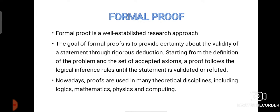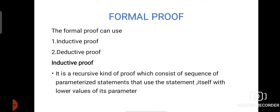Nowadays proofs are used in many theoretical disciplines including logistics, mathematics, physics, and computing. Formal proof can be divided into two types: inductive proof and deductive proof. Inductive proof is a recursive kind of proof which consists of a sequence of parameterized statements that use the statement itself with lower values of its parameters. Initially lower values of the parameter will be applied, then more complex values will be applied to prove the statement.